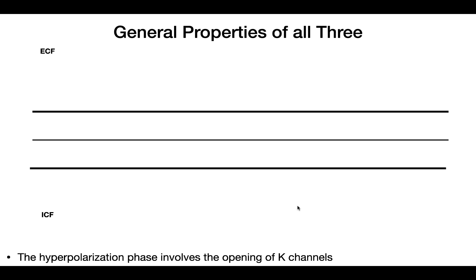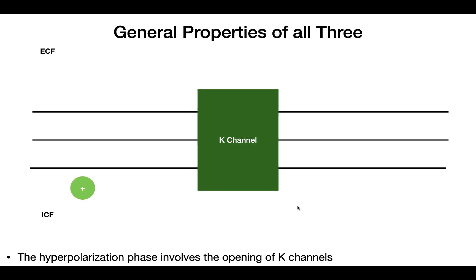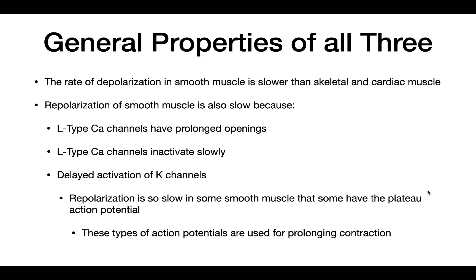Another general property is the repolarization phase, which is primarily governed by the opening of potassium channels. Depolarization opens these channels, allowing potassium to flow out of the cell, causing negative charge to build up inside, leading to hyperpolarization. Additionally, the rate of depolarization in smooth muscle is slower than in skeletal and cardiac muscle, and repolarization is also slower — because L-type calcium channels remain open longer, inactivate more slowly, and there is a delayed opening of potassium channels.